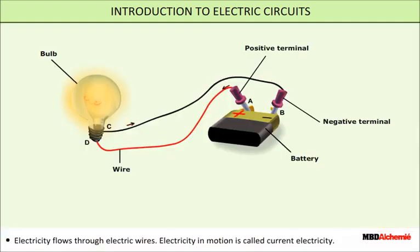Electricity flows through electric wires. Electricity in motion is called current electricity.